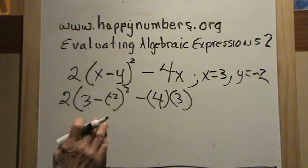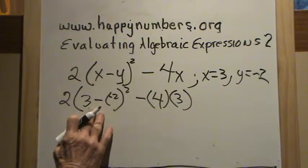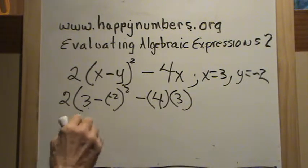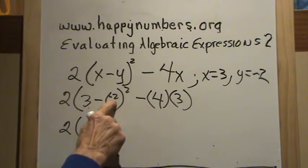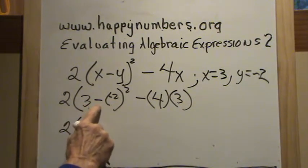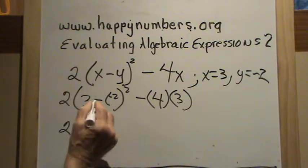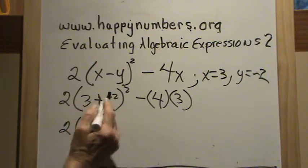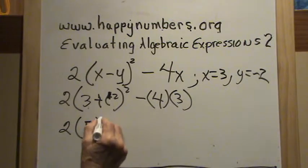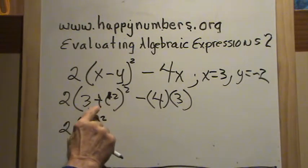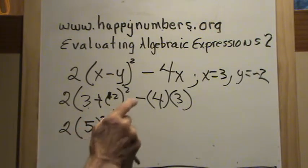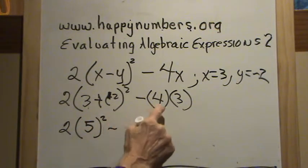We have to do parentheses first — please excuse my dear Aunt Sally. So, 2 times: we have 3 minus a negative 2. When subtracting signed numbers, we add the opposite, so this becomes an addition problem and the negative 2 becomes positive. So we have 3 plus 2, which is 5, squared. Then minus 4 times 3.